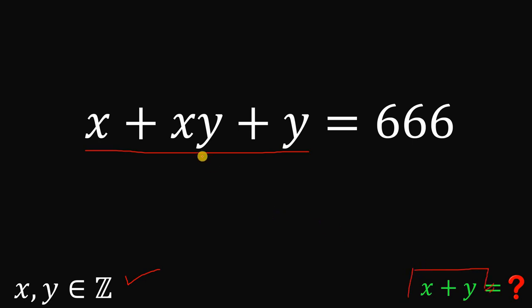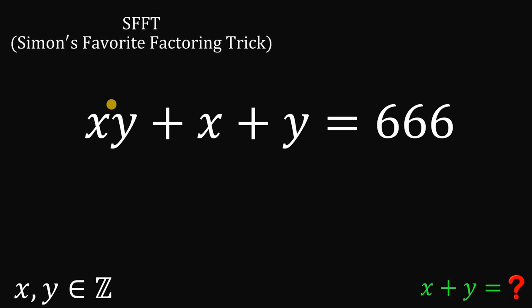Now, to answer this question, what we're going to do is rearrange some terms a little bit on the left-hand side. So, let's interchange xy and x like this. Now, why do we do that? Because we will use what we call Simon's Favorite Factoring Trick, or simply SFFT.